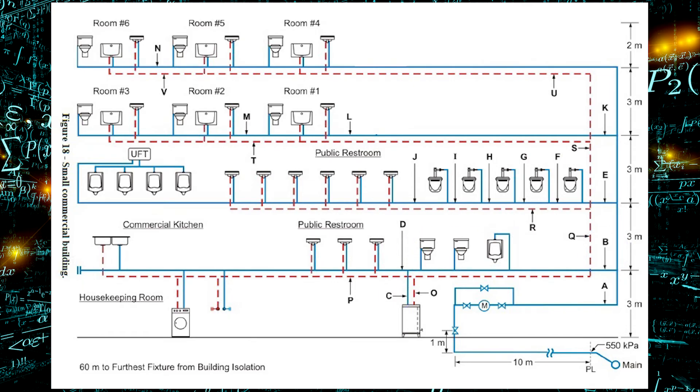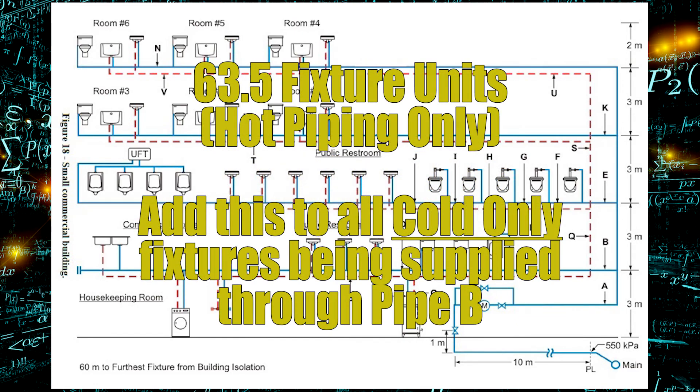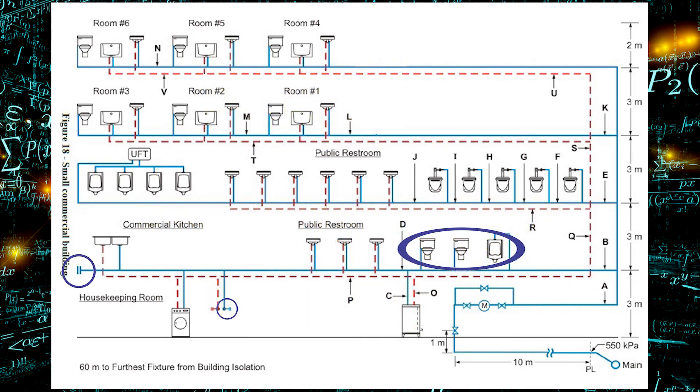Well, first we need to consider the hydraulic load. So what we need to do is add up all the fixture units that are going to come out of the hot water tank and add it to any cold-only fixtures that pipe B needs to supply. The cold-only fixtures are the urinal, two water closets, and two hose bibs.